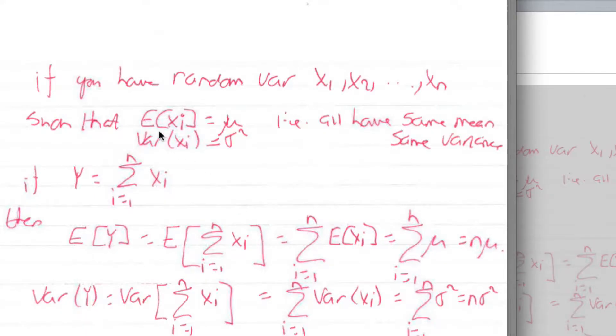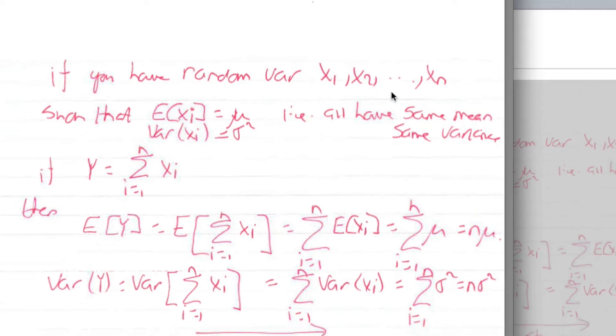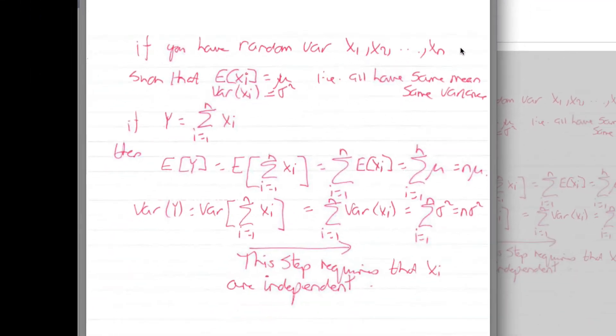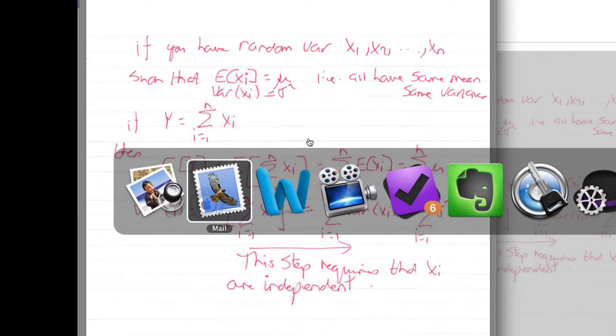Okay, so basically if you have random variables x1 up to xn with the same mean and the same variance, and then we add them together, the expected value is n times mu, and the variance is n times sigma squared. Notice this step here assumes that they're independent, so you have to assume that they're independent to use that.